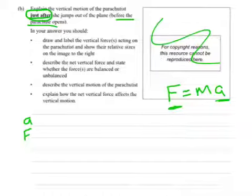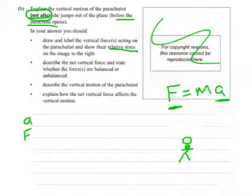See, we were talking about that even before we got there. But it's important. And show their relative sizes on the image to the right. Well, there's no image there, so we're just going to draw a person falling. They've got a parachute on their back. And, yeah. So there are two forces acting on them. What are they?